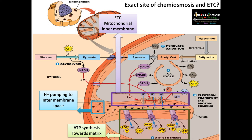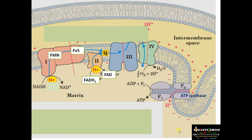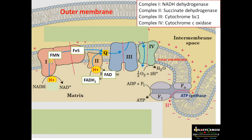Now moving into the chemiosmotic hypothesis. This is the mitochondrial outer membrane and the mitochondrial inner membrane where protein complexes are located. You can see Complex 1, which is NADH dehydrogenase; Complex 2, succinate dehydrogenase; Complex 3, cytochrome BC1; and Complex 4, cytochrome C oxidase.